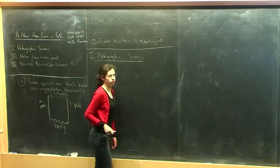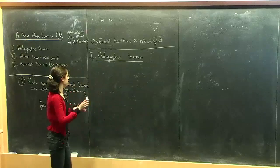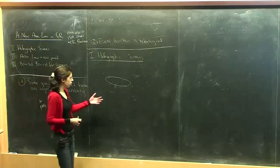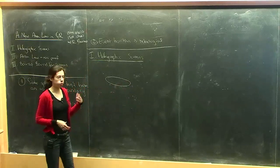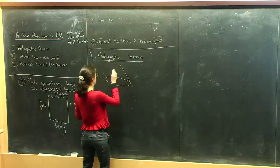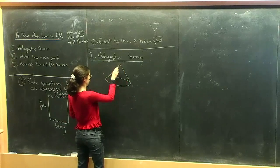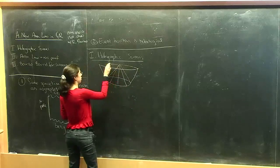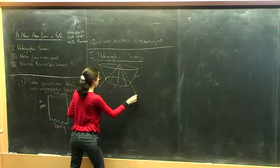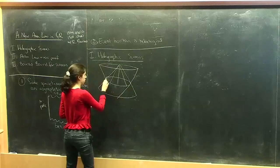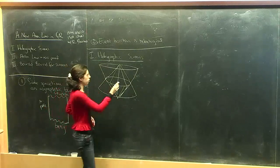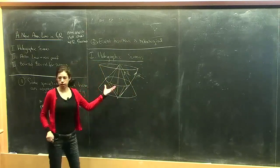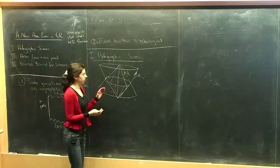Holographic screens are defined in terms of the null expansion of geodesics. From a co-dimension two surface, there are four null congruences of geodesics: future inwards directed, future outwards directed, past outwards directed, and past inwards directed. I'll call the vectors generating the future inwards direction K, and the vectors generating the future outwards direction L. In the way I've drawn it, this null congruence is expanding and this one is contracting — this is what we call a normal surface.